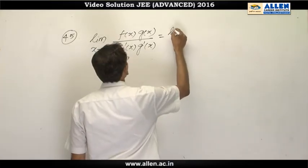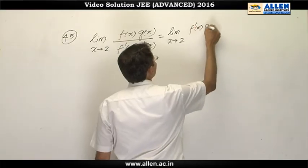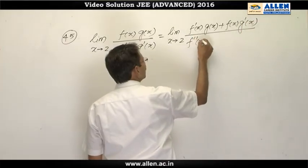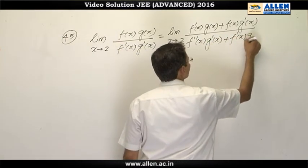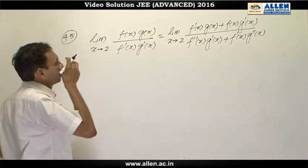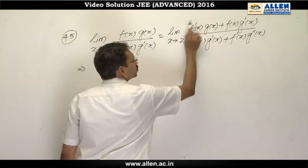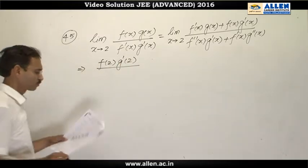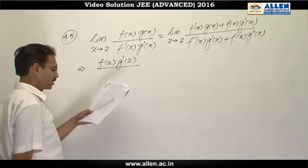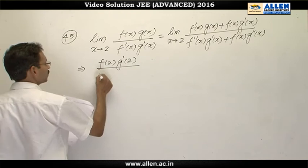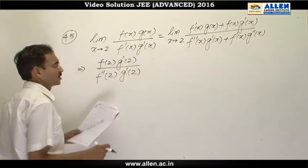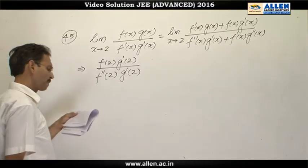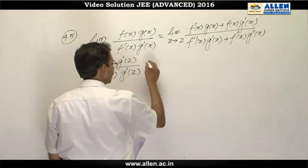By L'Hospital, it will become limit x approaching to 2, f dash x into g(x) plus f(x) into g dash x divided by f double dash x into g dash x plus f dash x into g double dash x. x is approaching to 2. Therefore, f dash x will approach to 0. So this quantity is 0. Applying the limit, it is f(2) into g dash 2 divided by f double dash 2 into g dash 2 as it is non-zero. Whereas f dash x is again 0. So this term will be 0. And g double dash is a finite quantity. Therefore I will say it is 0 and this limit is 1.